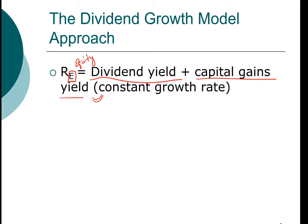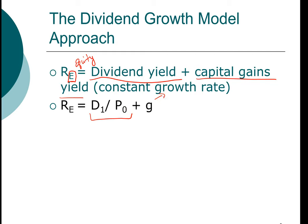Since we will be dealing with many different types of returns, we want to label them appropriately. In equation form, dividend yield is defined as the dividend in year one divided by the price in year zero. D1 is the dividend in year one, P0 is the price of the stock in year zero, and G is the constant growth rate for the stock.